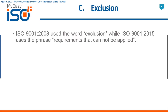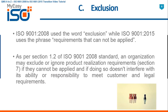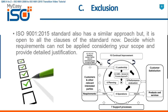C — Exclusion. ISO 9001 2008 used the word exclusion while ISO 9001 2015 uses the phrase 'requirements that cannot be applied.' As per section 1.2 of ISO 9001 2008, an organization may exclude or ignore product realization requirements in section 7 if they cannot be applied and if doing so doesn't interfere with its ability or responsibility to meet customer and legal requirements. ISO 9001 2015 has a similar approach but, instead of restricting this to only one clause, this thinking is applied to all requirements of ISO 9001 2015.